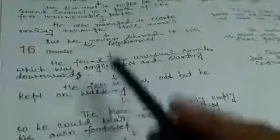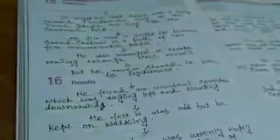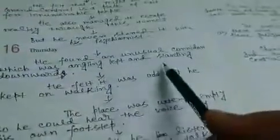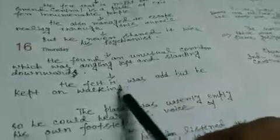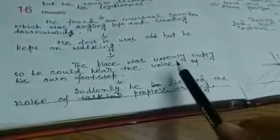He found an unusual corridor was angling left and slanting. This all he gave an explanation of his deed. On that day, he found an unusual corridor which was angling left and slanting downwards. This is not usual thing. He felt it was odd, but he kept on walking. And when he was walking, the place was utterly empty. So, as it was utterly empty, he could hear the voice of his own footstep also.